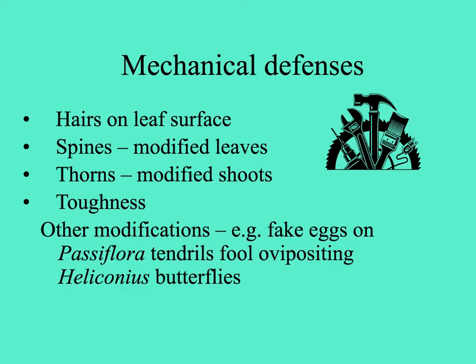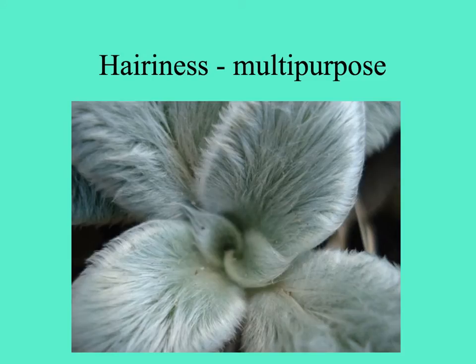Sometimes plants have evolved things that fool herbivores. For example, some Passiflora species have little bumps on them that look like butterfly eggs, deterring oviposition by Heliconius butterflies. Here's a beautiful example of hairy leaves — multi-purpose, as they can reflect excessive insolation, but imagine if you were a butterfly trying to lay an egg or a caterpillar trying to take a bite.